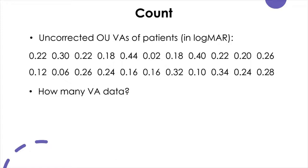So, how many patients' visual acuities do we have here? Let's just count — we have 11 in one row and two rows total, so we have 22 measurements of visual acuity. When you report the number of data entered into the analysis, you use small n, like this — n equals 22. This is how you report the number of data used in the analysis.